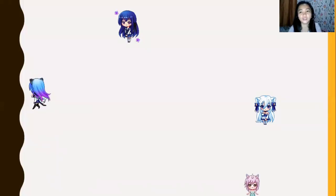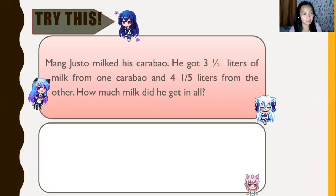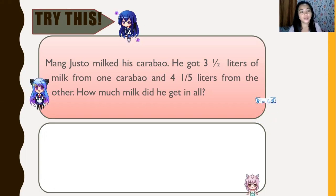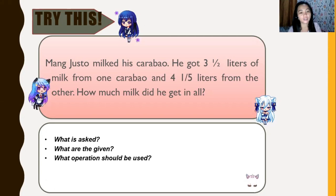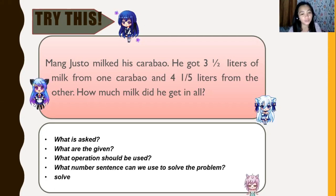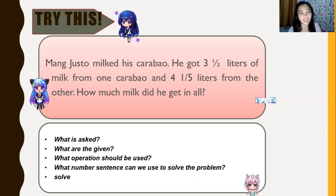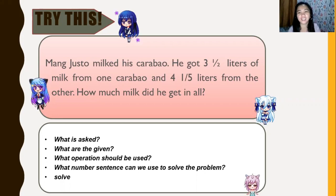Now it's your turn. Mang gusto milked his carabao. He got 3 and 1/2 liters of milk from one carabao and 4 and 1/5 liters from the other. How much milk did he get in all? Try to answer this problem, and if you know the answer, comment it in the comment box. If you like this video, click thumbs up and subscribe to my channel. Bye-bye!